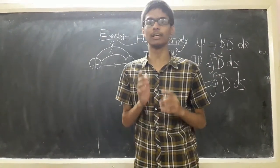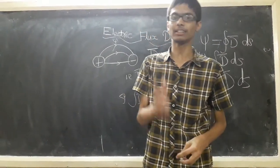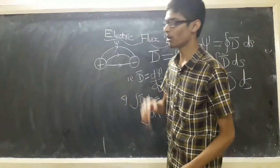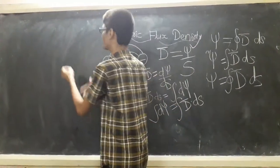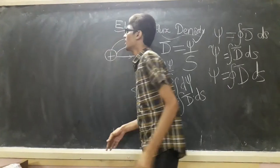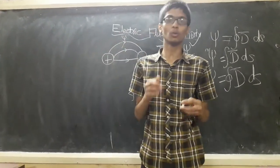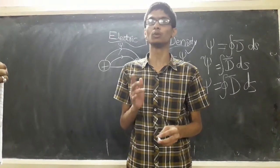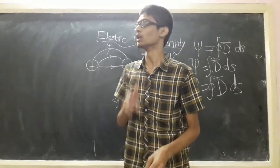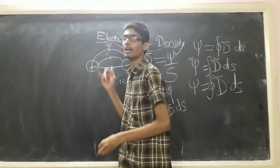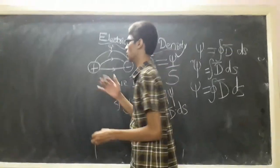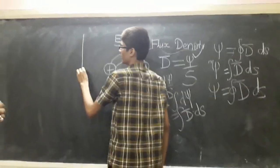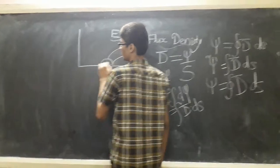This completes the electric flux density. Now let us see the first application about Gauss's law. Gauss's law states that the total electric flux passing through any closed surface is equal to the charge enclosed by the closed surface.